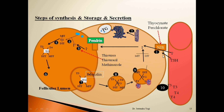In summary: the first step was iodine trapping, in which iodide molecules enter from plasma to the thyroid follicular cell. The second step was synthesis and secretion of thyroglobulin, which occurs on the rough endoplasmic reticulum — where the peptide is formed — and on the Golgi apparatus, where carbohydrate moiety is added to form the final thyroglobulin molecule. This thyroglobulin is stored in vesicles and then travels toward and is released into the lumen of the thyroid follicle.